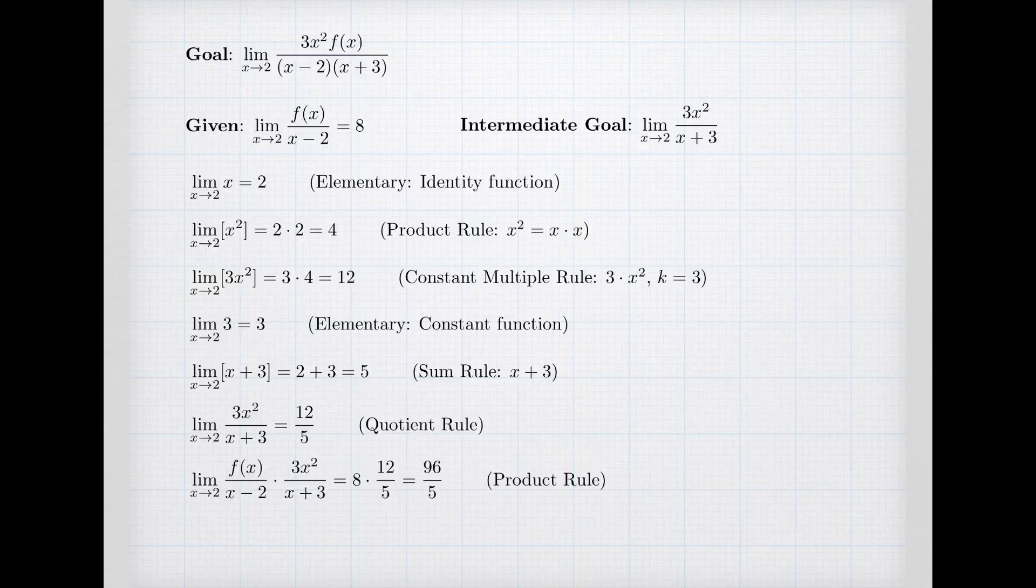And we're done. We've started with our given limit and elementary limits—the limit of the identity function and the limit of constants. And through the limit rules we've constructed limit equations that allow me to result in our final limit that we wanted to get.